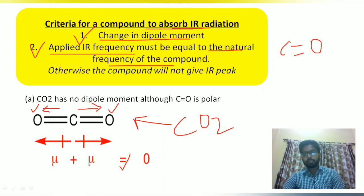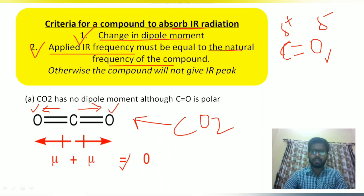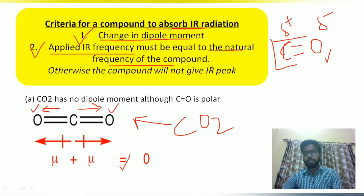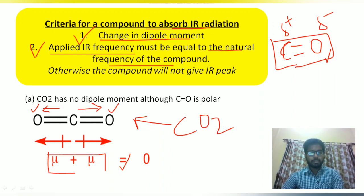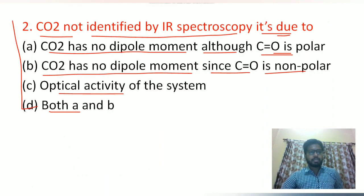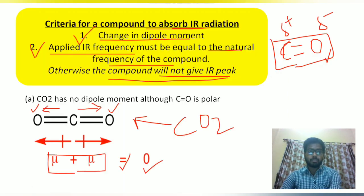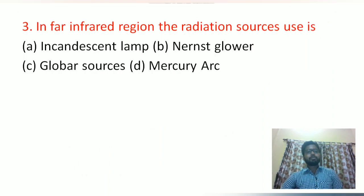The CO bond is polar because oxygen has a delta-minus charge and carbon has a delta-positive charge, as oxygen is more electronegative than carbon. However, the net dipole moment is zero in CO2, so it will not give any IR peak. Therefore, option A is the answer: CO2 has no dipole moment, although the CO bond is polar. This is a very basic and important question for understanding IR spectroscopy.